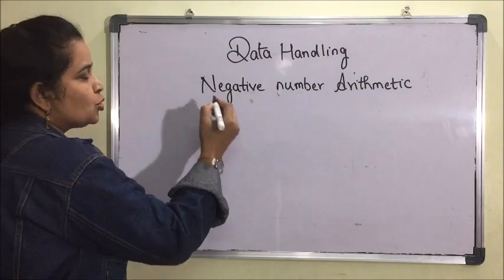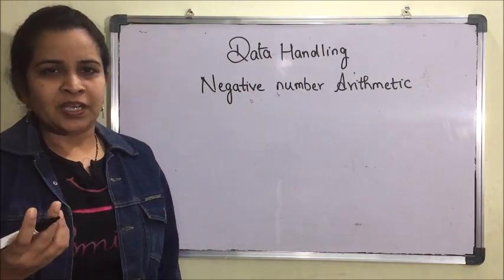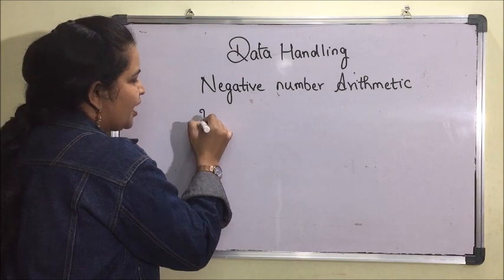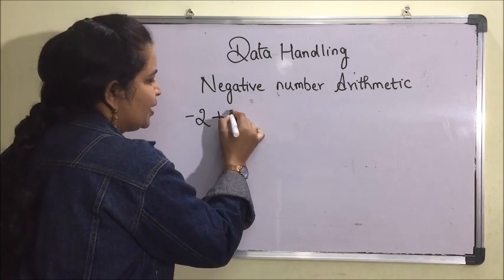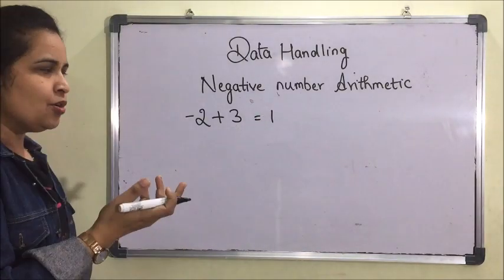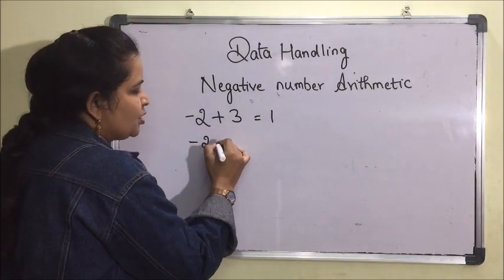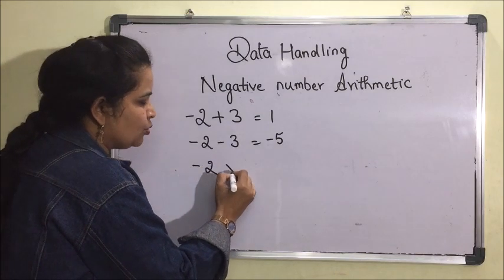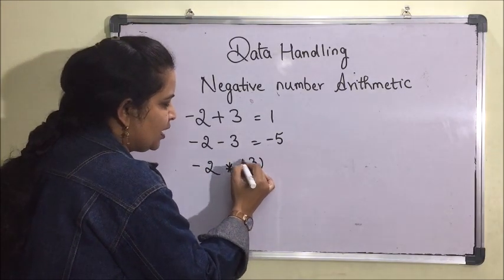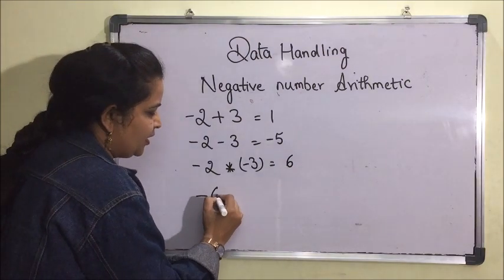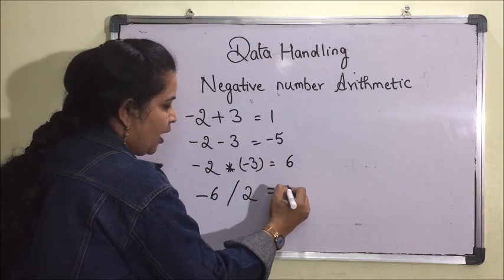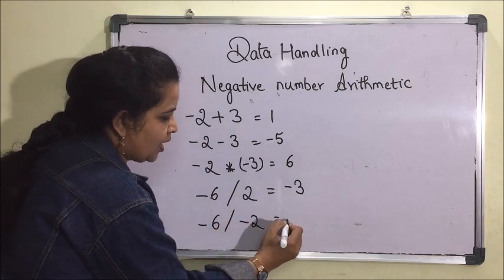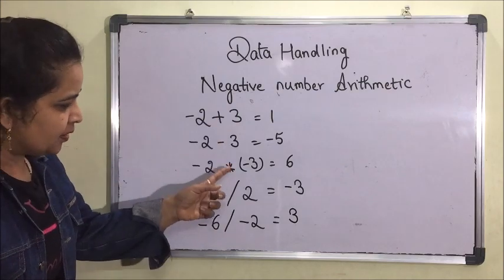If we talk about simple addition, subtraction, multiplication, and division, then no problem — it will be as usual. For example, minus 2 plus 3 gives 1; minus 2 minus 3 gives minus 5; minus 2 multiplied by minus 3 gives 6; minus 6 divided by 2 gives minus 3; and minus 6 divided by minus 2 gives 3.